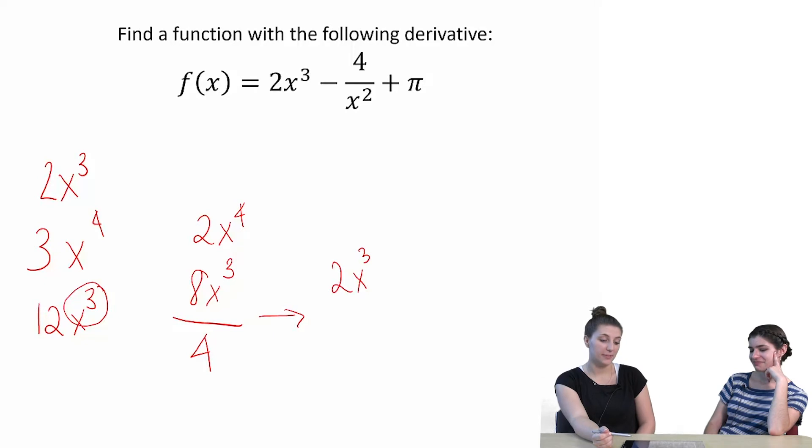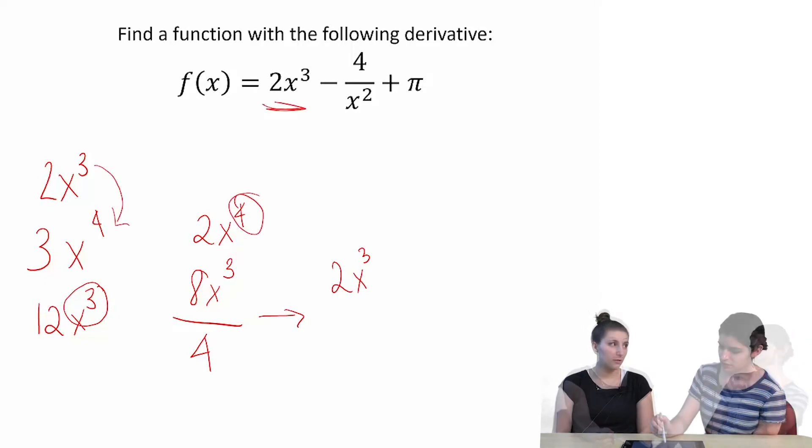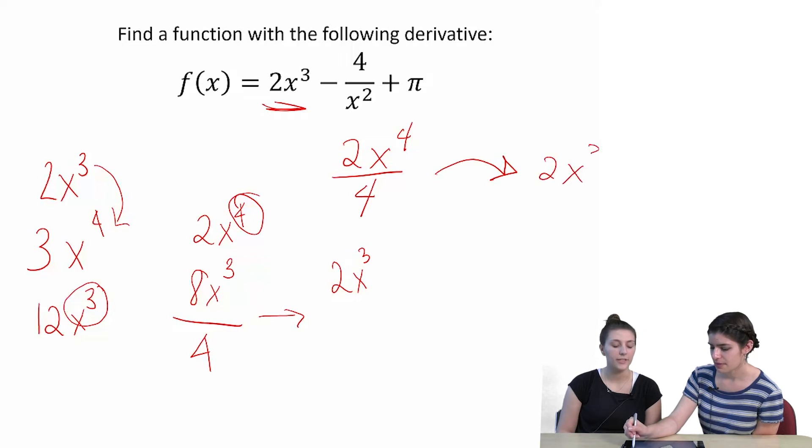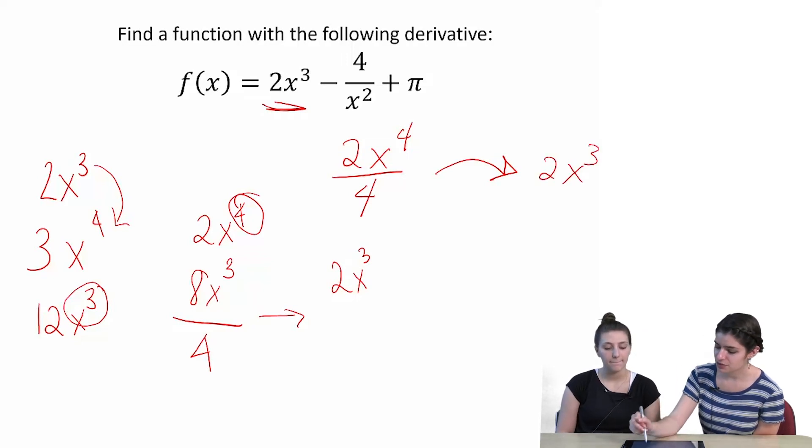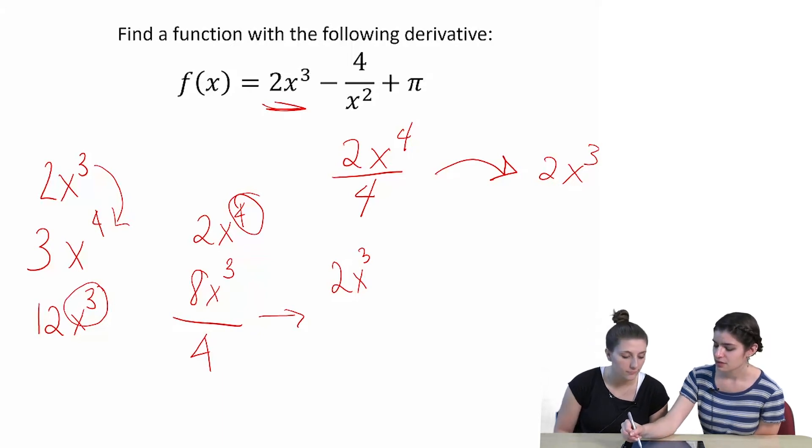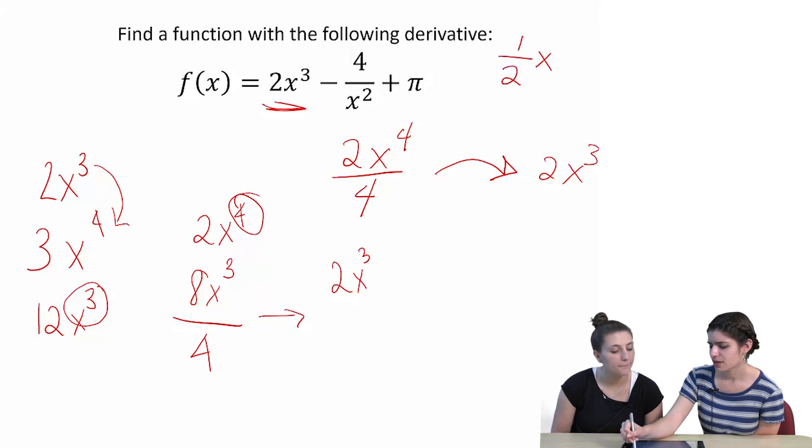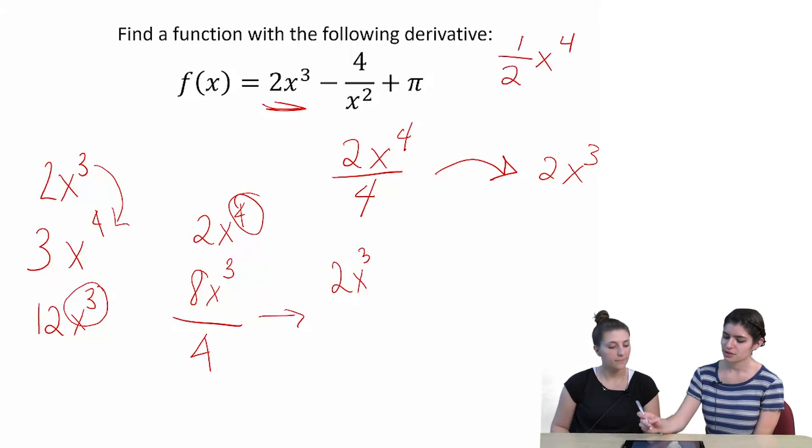I mean, that works, but it works, but I feel like we just kind of did it to make it happen. So 2x to the fourth divided by four. When we took the derivative, that turned into 2x to the third. Yeah. So that means the first term for our original equation is 2x to the fourth over four, which is just a half x to the fourth.